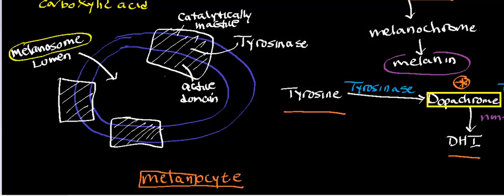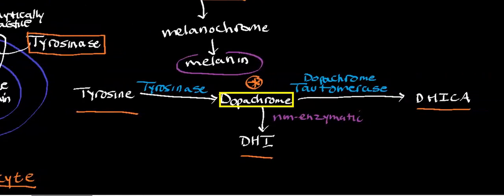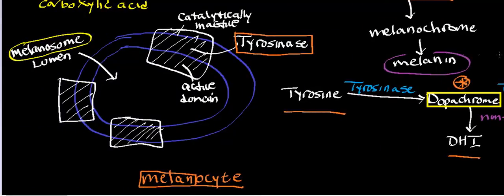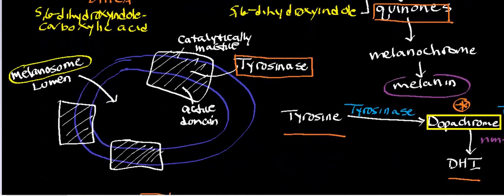It's not completely empty inside the melanosome because there are enzymes present. Embedded in the membrane of the melanosome is the special enzyme tyrosinase, which originally gave us our dopachrome. Also inside the melanosome is dopachrome tautomerase. Tyrosinase also performs the oxidation of the two premonomers into their respective quinones, which get polymerized into melanin. So the synthesis of dihydroxyindole carboxylic acid and dihydroxyindole both occur inside the lumen of the melanosome.